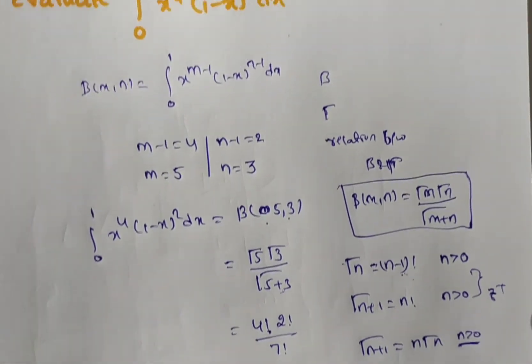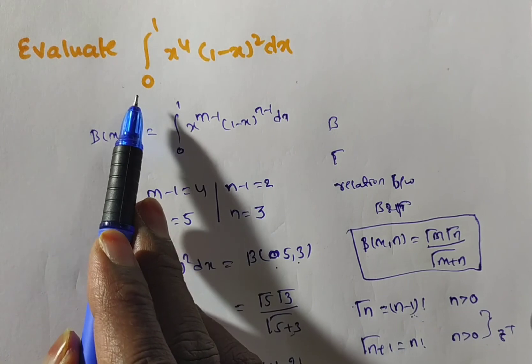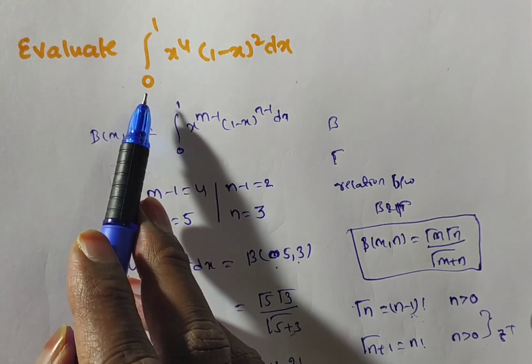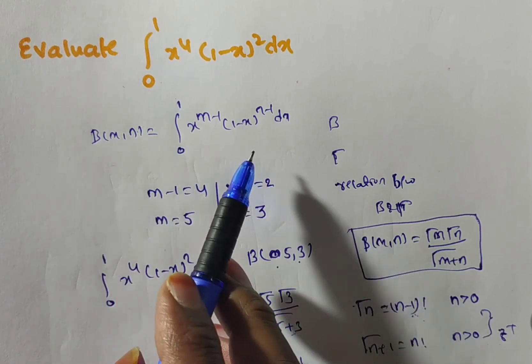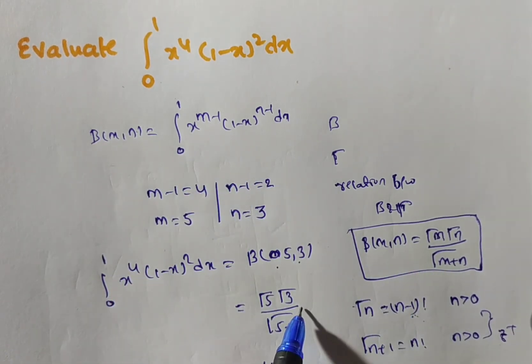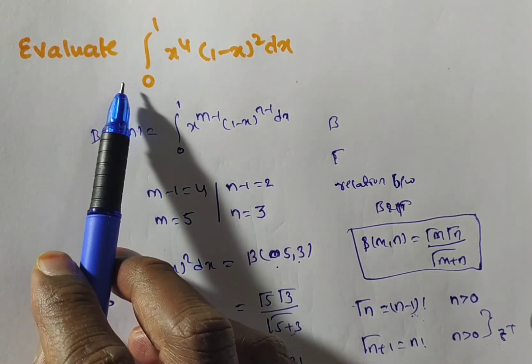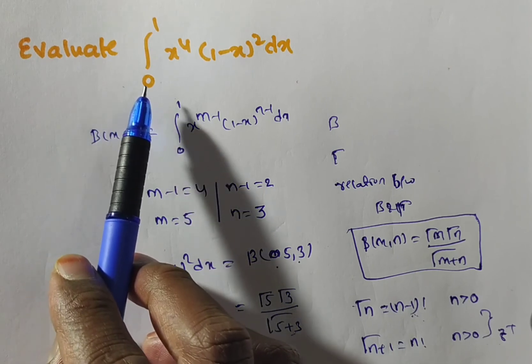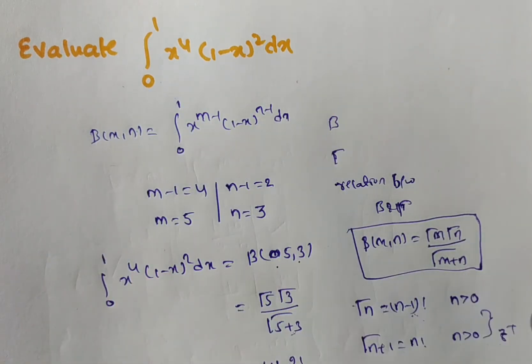So, to evaluate these types of problems, remember, if you are comparing the given problem with a beta function, then you have to simplify this one by the relation of beta of m comma n also in general. Sometimes, they will ask in the problem, in place of evaluation, they will ask prove that this is equal to beta of 5 comma 3 also.